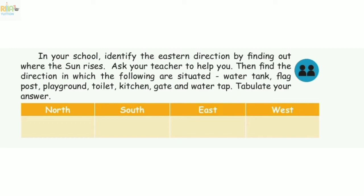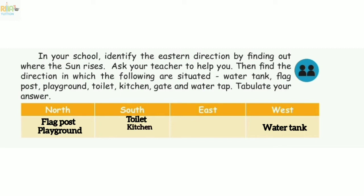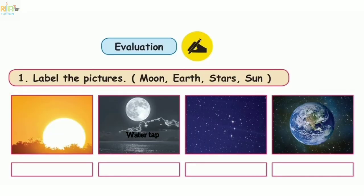First, water tank — it is located in the south. Playground is in the north. Toilet is in the south. Kitchen is in the south. The gate is mentioned on the east side, and the water tap is mentioned on the south side. This is our activity part.